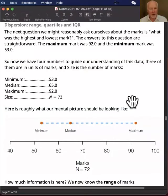Okay, so we know the median of the marks is 65. The next question we might reasonably ask is what was the largest mark or the highest mark, and what was the smallest mark? What was the maximum and the minimum?